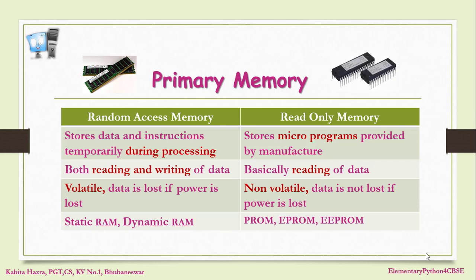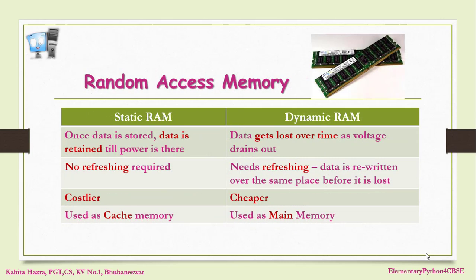RAM can be divided into static RAM and dynamic RAM. Different variations of ROM are programmable read-only memory, erasable programmable read-only memory, and EEPROM. Static RAM means data is retained as long as power is there, whereas in dynamic RAM the data gets lost over time as the voltage drains out, so refreshing is required — data has to be rewritten before it is lost. Dynamic RAM is cheaper and is used as main memory, whereas static RAM does not require refreshing but is costlier, being made up of semiconductor memory, and is used as cache memory.